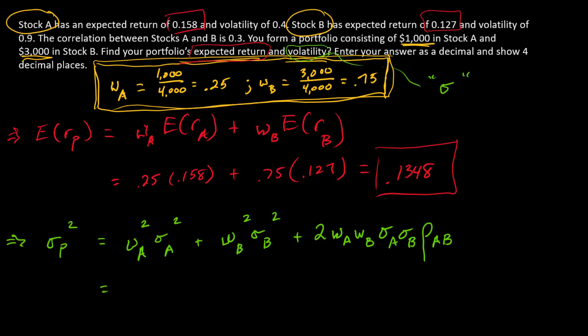So we should be able to now just insert values and solve. So WA squared, that's 0.25 squared. Sigma A squared. What do we have in the problem? Here is sigma A. That's the standard deviation or the volatility of stock A, and so that's just going to need to be squared. So we're going to multiply that by 0.4 squared.